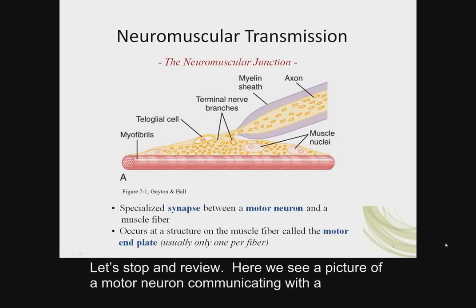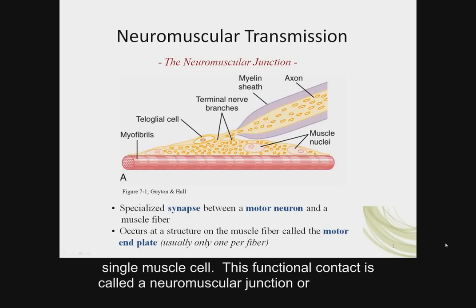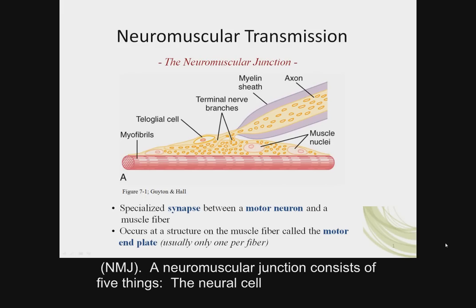Let's stop now and review. Here we see a picture of a motor neuron communicating with a single muscle cell. This functional contact is called a neuromuscular junction, or NMJ.